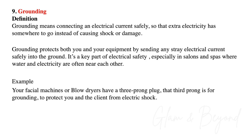Number nine, grounding. Grounding means connecting an electrical current safely so that extra electricity has somewhere to go instead of causing shock or damage. Grounding protects both you and your equipment by sending any stray electrical current safely into the ground. It's a key part of electrical safety, especially in salons and spas where water and electricity are often near each other. For example, facial machines or blow dryers have a three-prong plug — that third prong is for grounding to protect you and the client from electric shock.